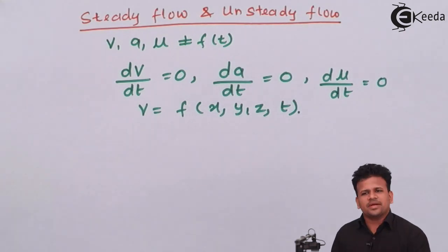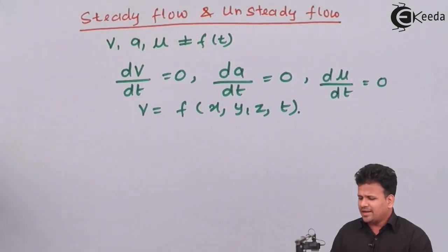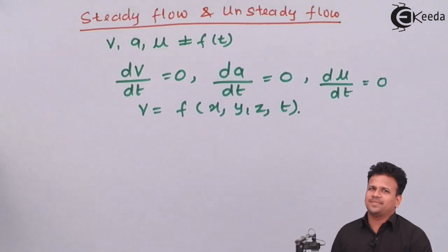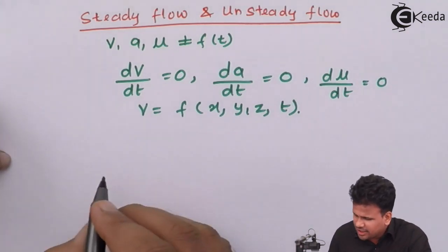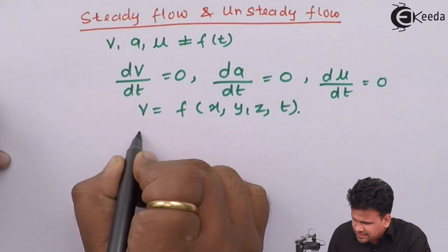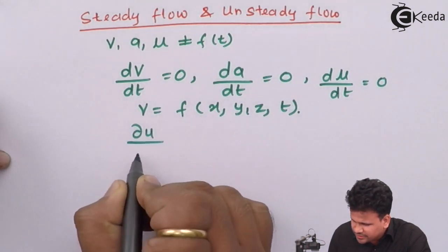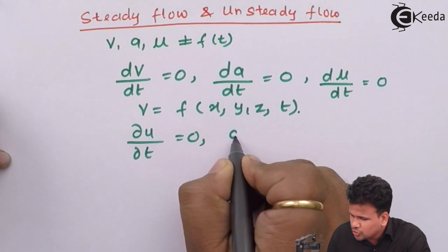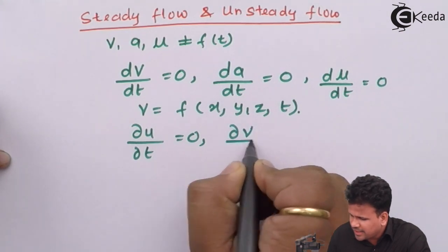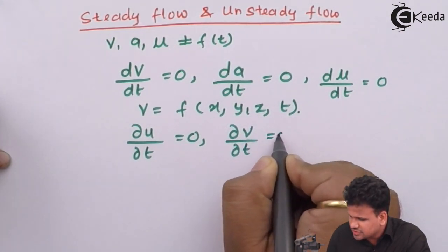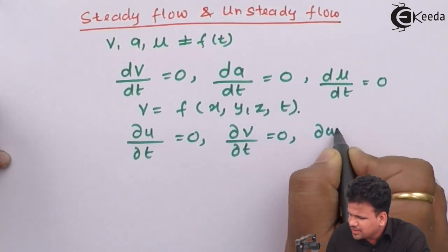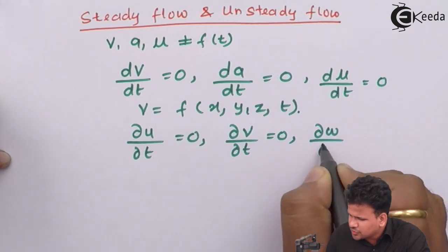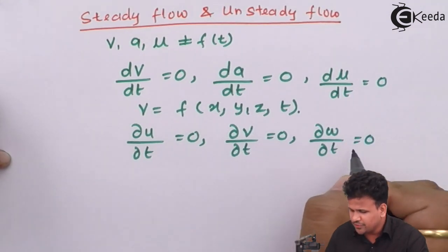So we can write: ∂u/∂t = 0, ∂v/∂t = 0, and ∂w/∂t = 0 for steady flow.